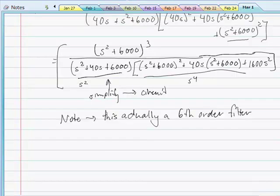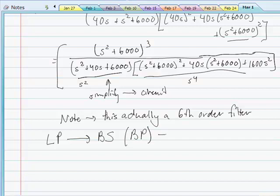And the reason that is, is that because of the transformation, when we take a low pass filter and make the substitution to make it a band stop filter, and this is also true for the band pass filter, we double the order of the filter.